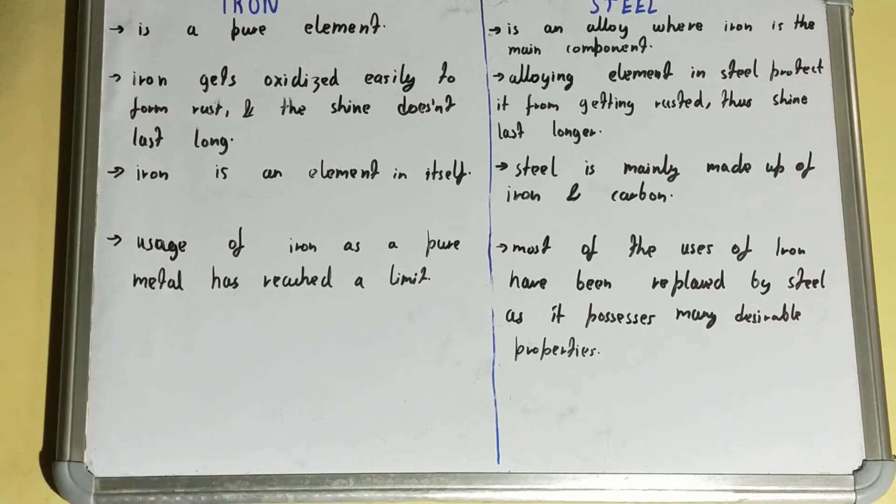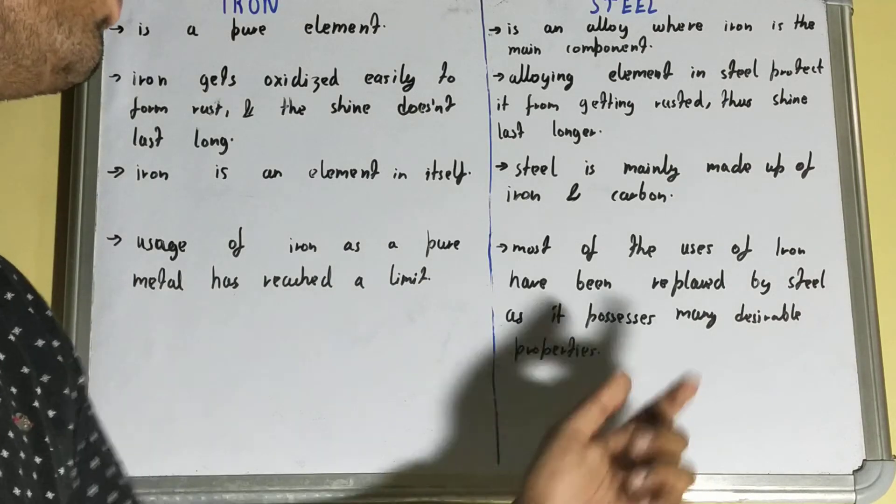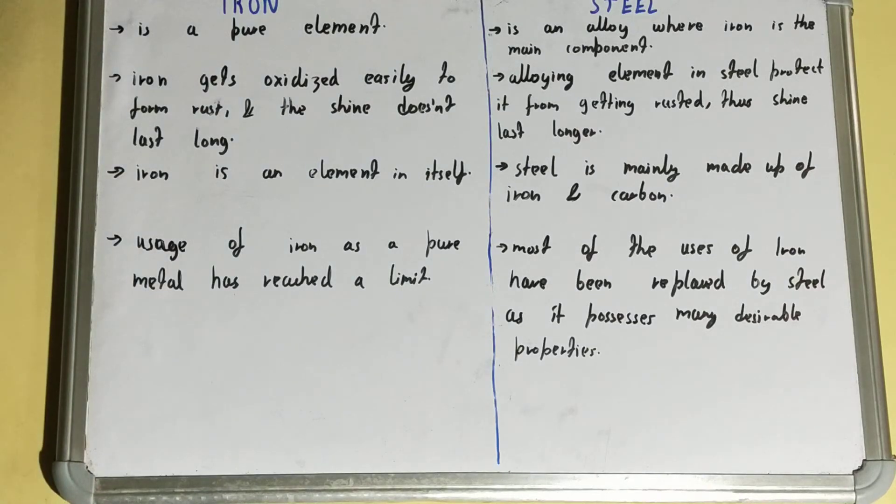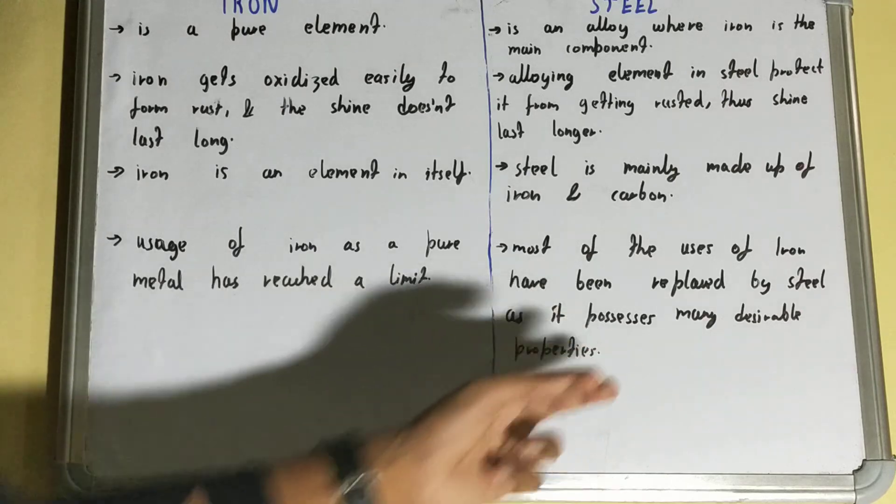But if we talk about steel, most of the uses of iron have been replaced by steel as it possesses many desirable properties. Steel doesn't get rusted easily and its shine lasts longer. That's why for utensils at home and other things, we prefer steel over iron.